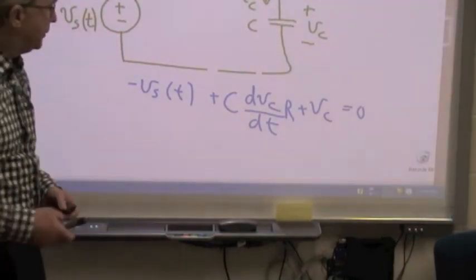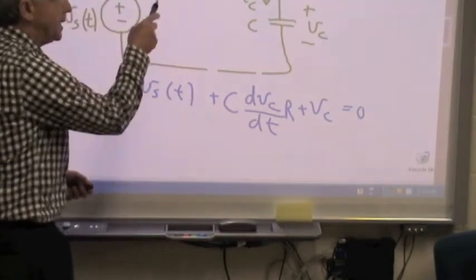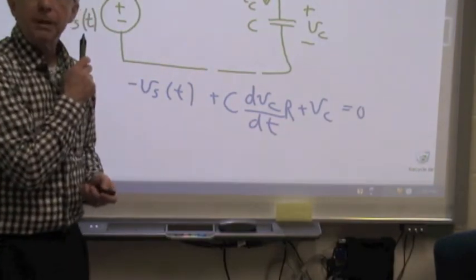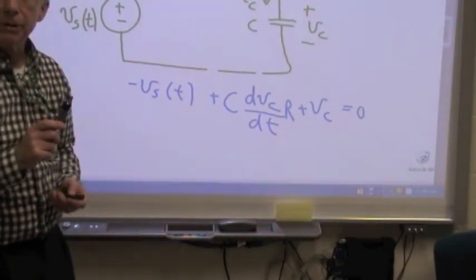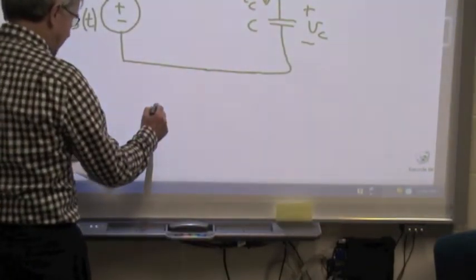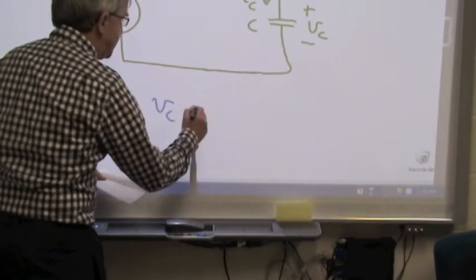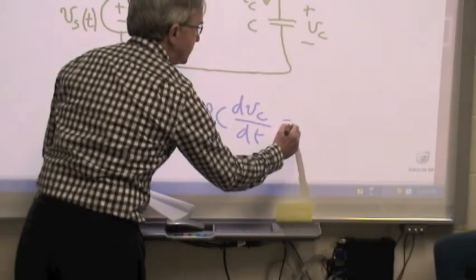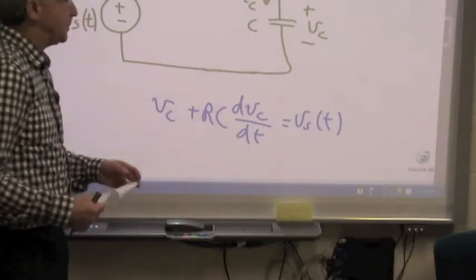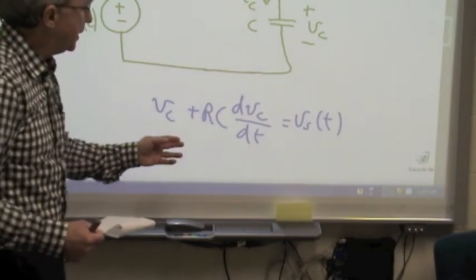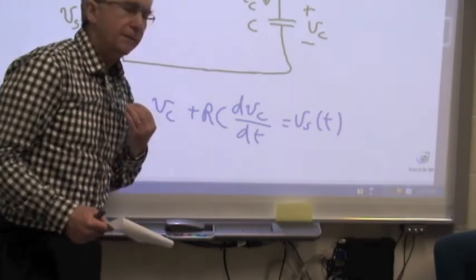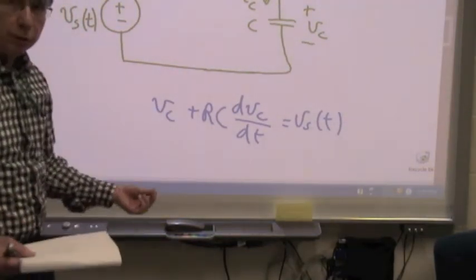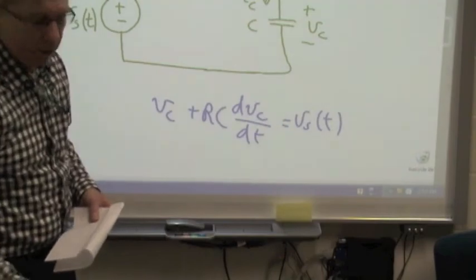Now, presuming that I know the value of R and C, that is I know the circuit for which I'm going to apply the solution, then I have one equation for one unknown, and that unknown is the capacitor voltage. Let's put that source voltage on the other side of the equal sign and write that Vc plus RC dVc/dt is equal to Vs(t). And we would like to be able to solve for the capacitor voltage as a function of time for a whole variety of source voltages, Vs(t). Hence, the title of today's lesson, a general approach to solving an RC circuit or an RL circuit.